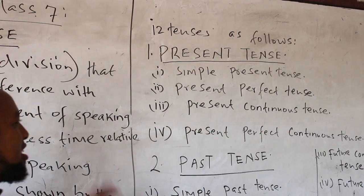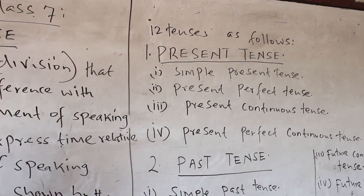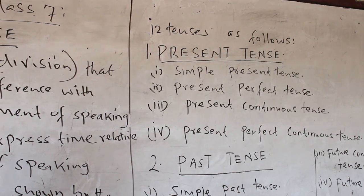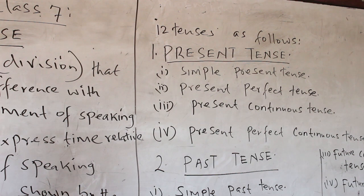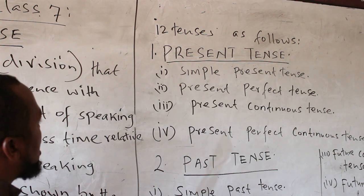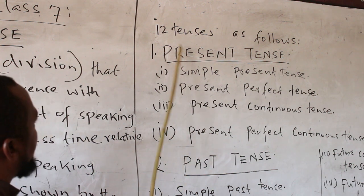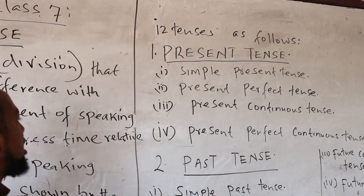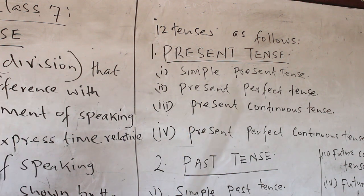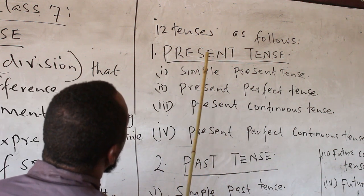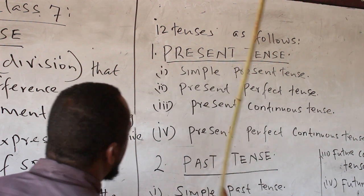English language is divided into three tenses: present tense, future tense, and past tense. These three tenses are further subdivided into twelve tenses. Present tense is subdivided into simple present tense, present perfect tense, and present continuous tense. These form a subdivision of present tense.